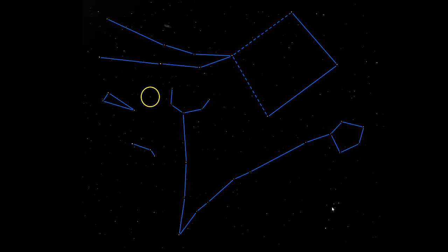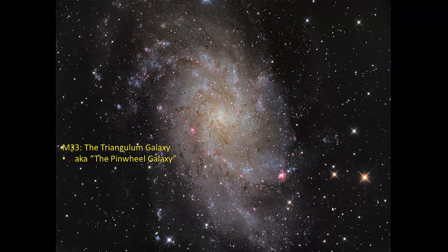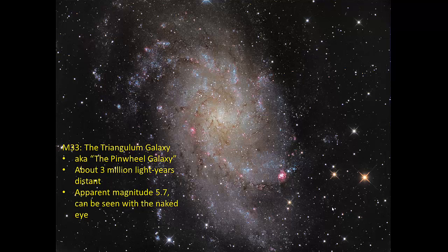One other object in this area, just off of Triangulum, is M33, known as the Triangulum Galaxy. Also known as the Pinwheel Galaxy. Although there are several galaxies known by that name. It's a little farther away than the Andromeda Galaxy. If you consider half a million light years, a little. Apparent magnitude of 5.7. Usually under dark skies you can see up to about magnitude 6. So you could possibly see this with the naked eye.